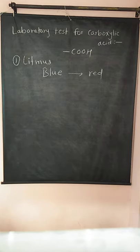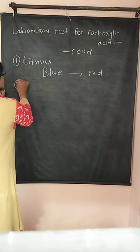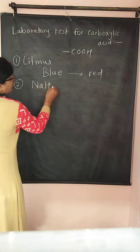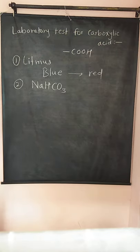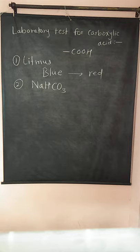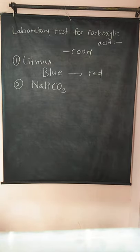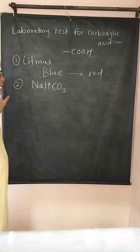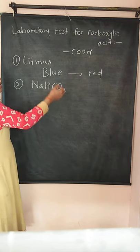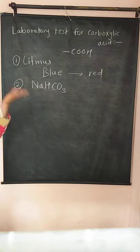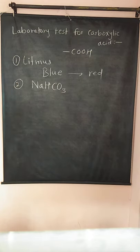The second test is the test with sodium bicarbonate, NaHCO₃ — sodium hydrogen carbonate or sodium bicarbonate. If a substance contains the COOH group and we add saturated sodium bicarbonate solution to it, then there is evolution — brisk effervescence — of CO₂ gas.